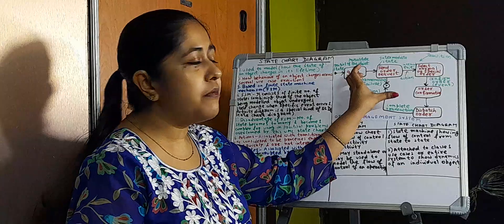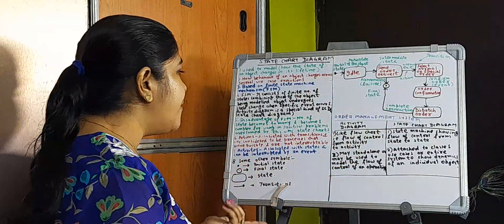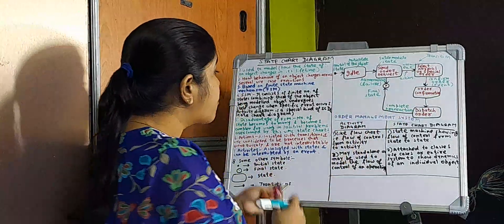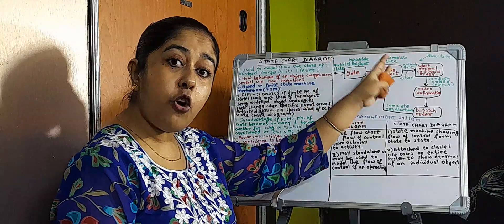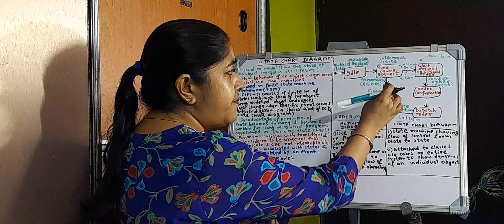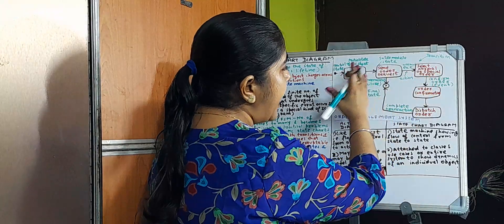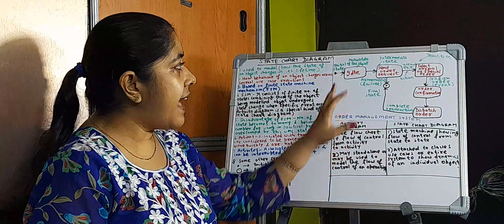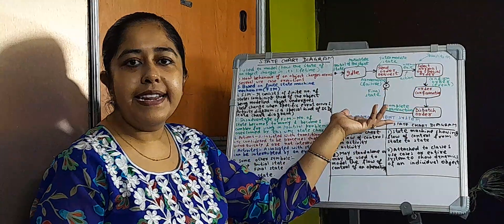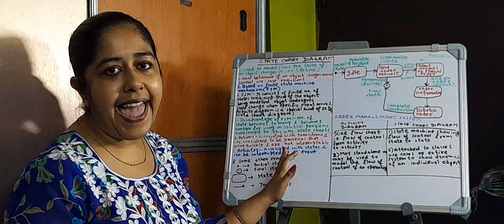Whenever some state changes and some transition is going on, some action is going on. Now, what are activities? Activities are associated with states and can be interrupted by any event. Actions cannot be interrupted, but when we talk about activities, they can be interrupted. This is the difference between actions and activities.